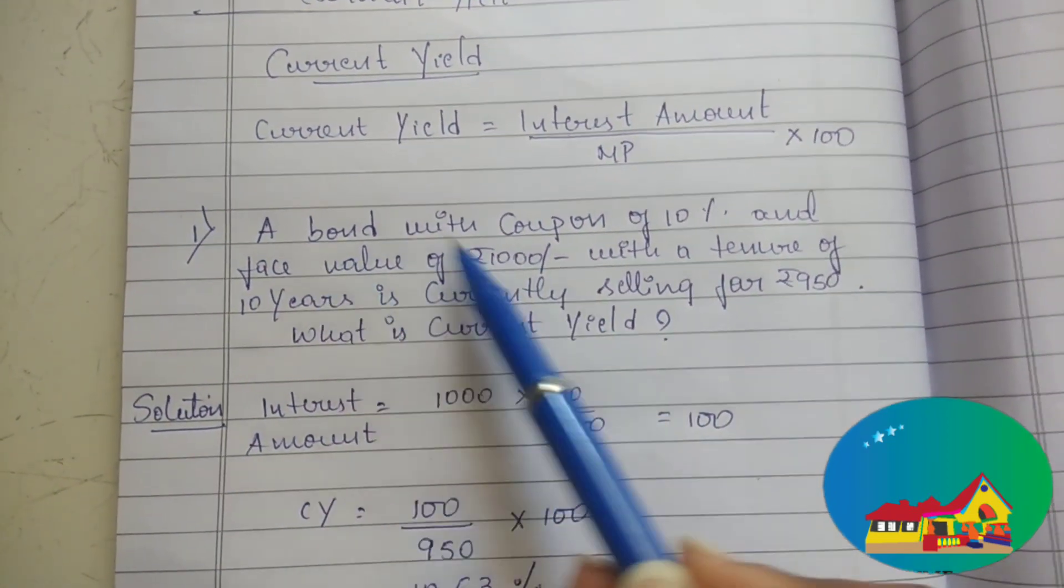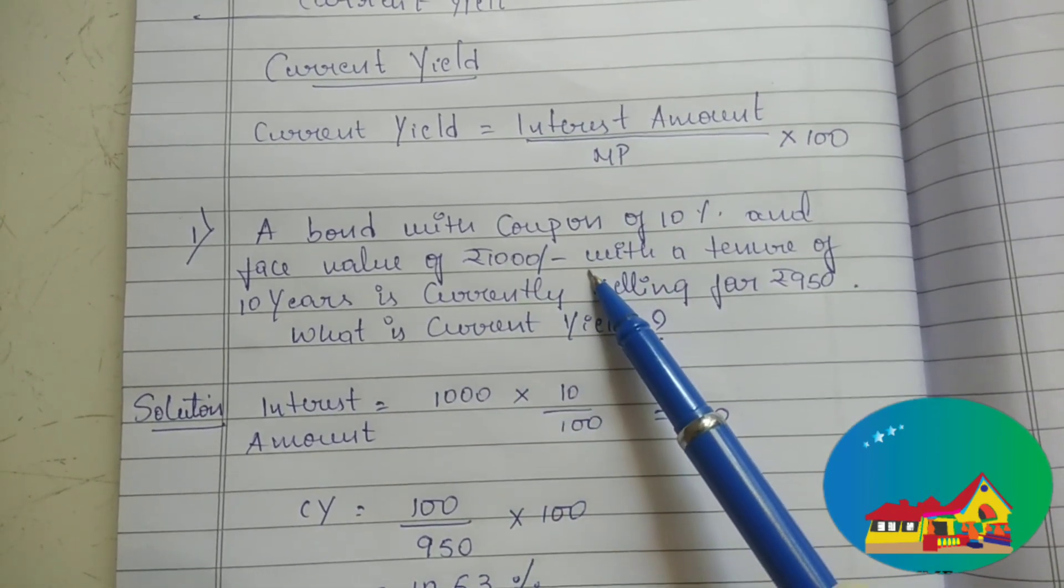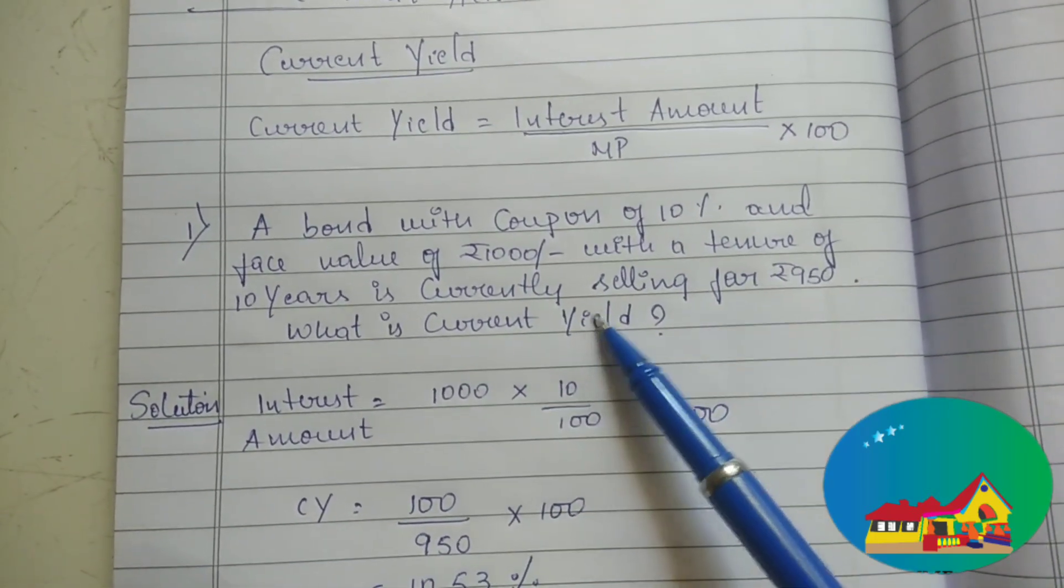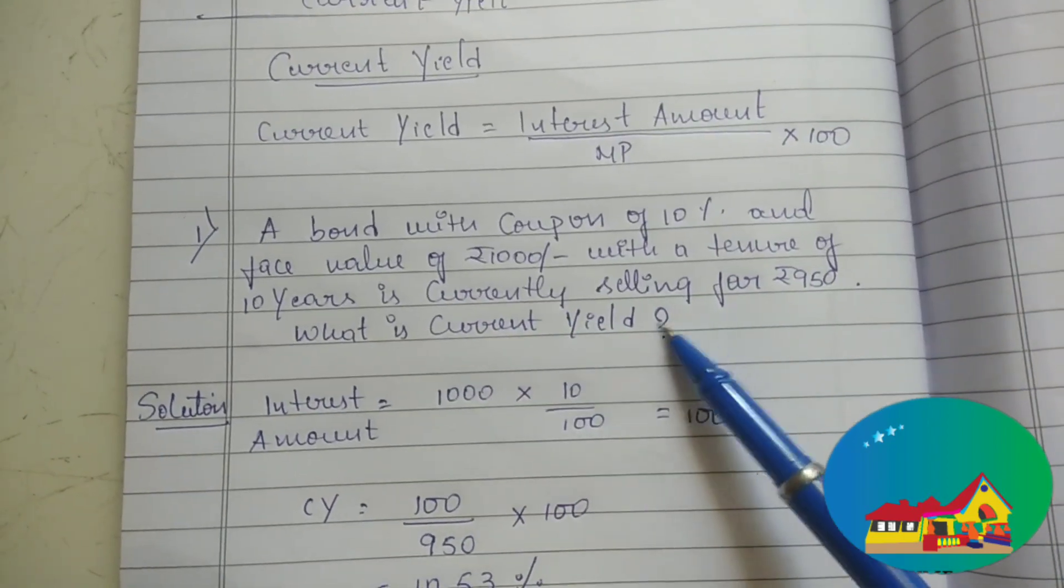First sum is, a bond with coupon of 10% and face value of 1000 rupees with a tenure of 10 years is currently selling for Rs. 950. What is current yield?